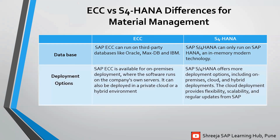Next one: deployment options. SAP ECC is available for on-premises deployment where the software runs on the company's own servers. It can also be deployed in a private cloud or hybrid environment. Whereas SAP S4HANA offers more deployment options including on-premises, cloud, and hybrid deployments. The cloud deployment provides flexibility, scalability, and regular updates from SAP.